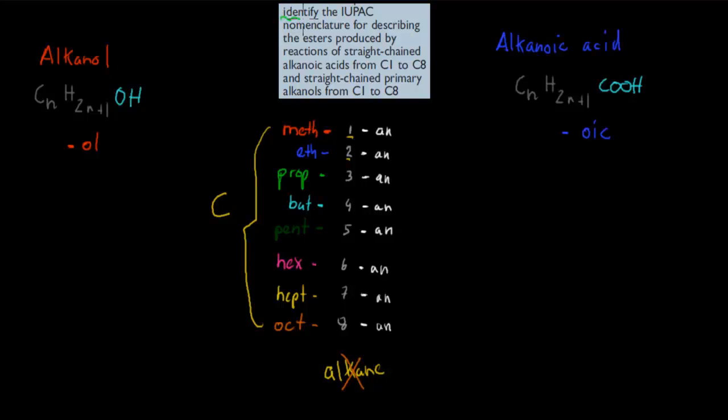It says identify the IUPAC nomenclature for describing the esters produced by reactions of straight-chained alkanoic acids from carbon 1 to carbon 8, and straight-chained primary alkanols from carbon 1 to carbon 8. So we need to know how we can actually name alkanols and alkanoic acids from carbon 1 to carbon 8. And then we need to know what happens, what changes to the naming once they've all combined to form an ester.